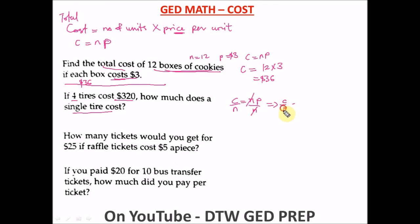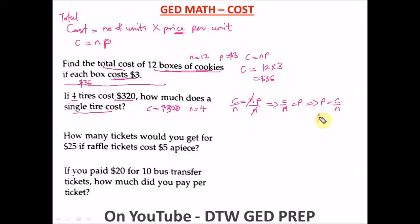So P equals C divided by N. Our total cost C is 320 dollars and the number of units N is 4 tires. Therefore P equals 320 divided by 4, which equals 80. So the price per tire is 80 dollars.